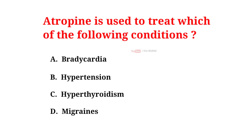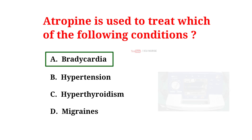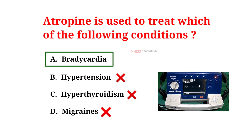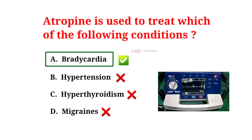Atropin is used to treat which of the following conditions? A. Bradycardia, B. Hypertension, C. Hyperthyroidism, D. Migraines. The correct answer is A. Bradycardia. Atropin is not used in the treatment of hypertension, hyperthyroidism and migraines. It is used in the treatment of bradycardia.